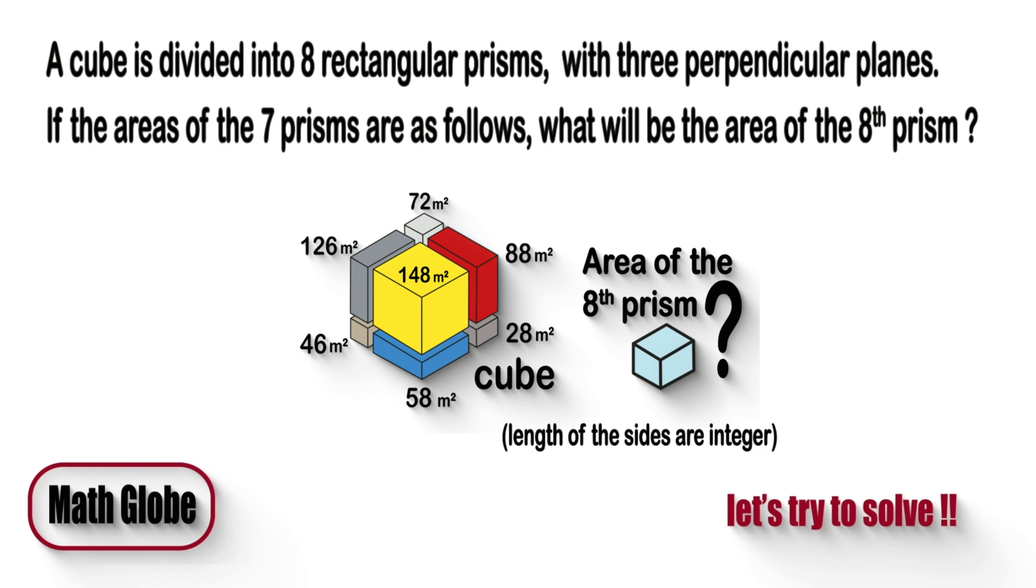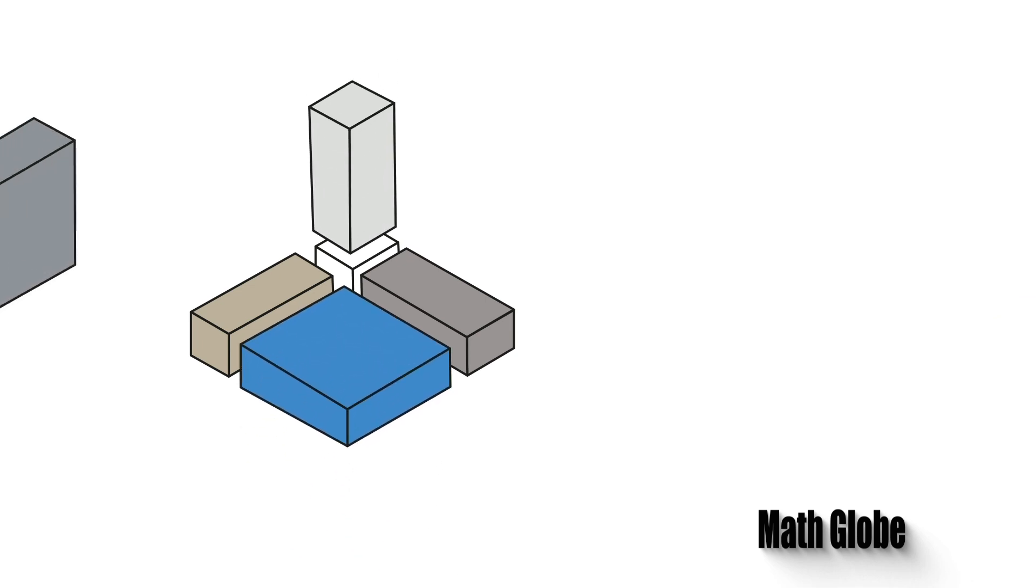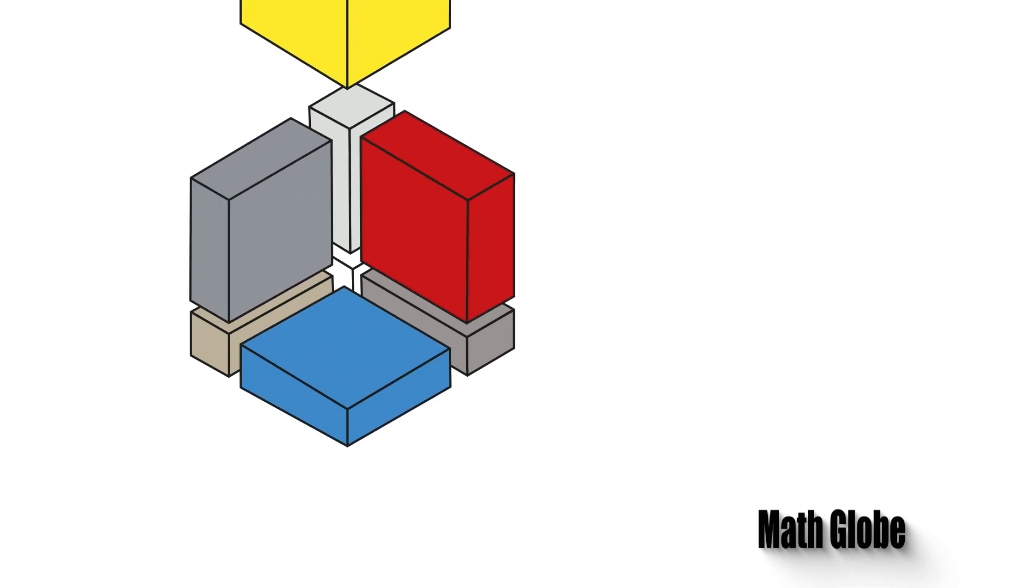Let the solution come. First, let's redraw the shapes here. As shown, the cube is divided into 8 rectangular prisms with 3 perpendicular planes.